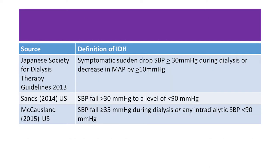Lately, in 2014 and 2015, these investigators emphasized more on the fluctuation numbers, with the assumption that while analyzing retrospective data, information about symptoms and interventions is more often absent or not available. So they talked about systolic blood pressure drop more than 30 to a level of less than 90, or systolic blood pressure fall equal to or more than 35. They ignored the symptoms.